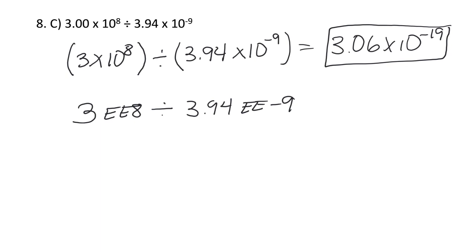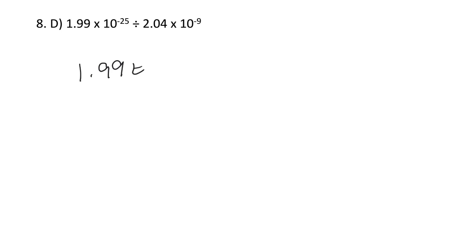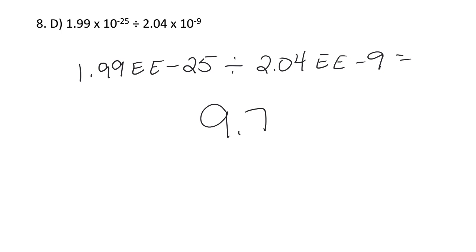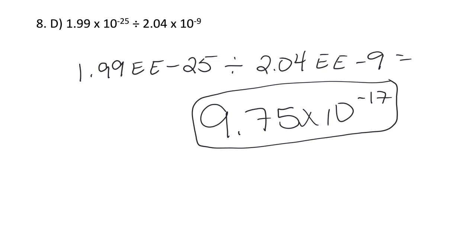Last one: 1.99 EE negative 25 divided by 2.04 EE negative nine. When you do that, you get 9.75 times 10 to the negative 17th. Now, all of these had answers that the calculator already put into scientific notation automatically. I'm going to do one more where the answer on your calculator will not come up in scientific notation and you have to convert it yourself.